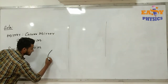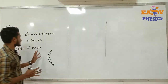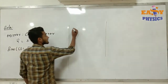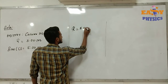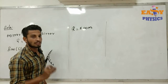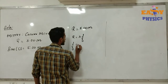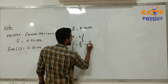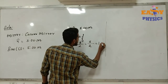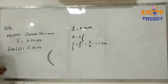The radius of curvature R equals 3 meters. We use the relation R equals 2f, which means f equals R divided by 2. So f equals 3 divided by 2, which equals 1.5 meters. The focal length is 1.5 meters.